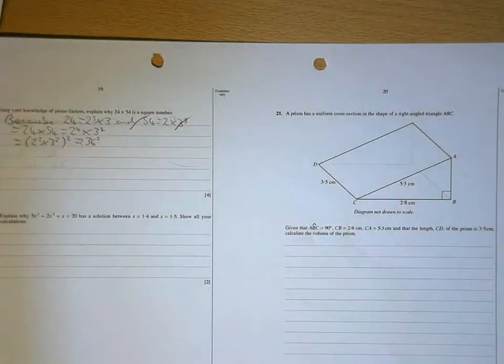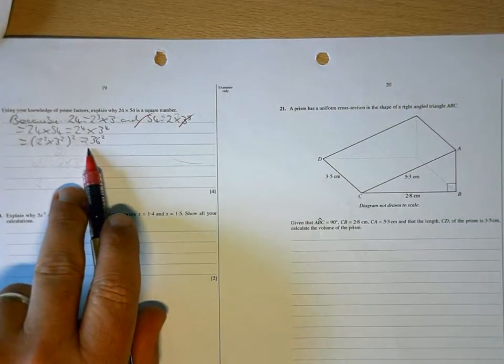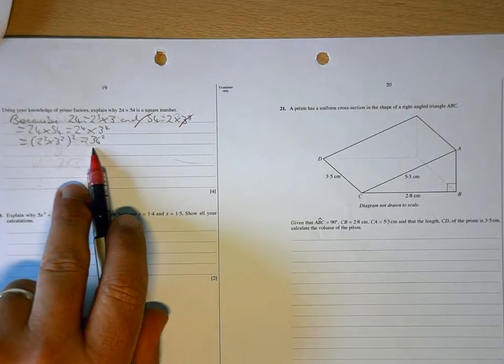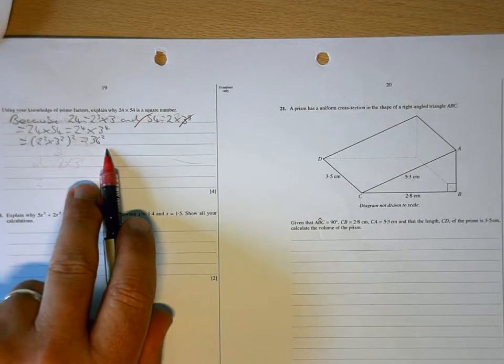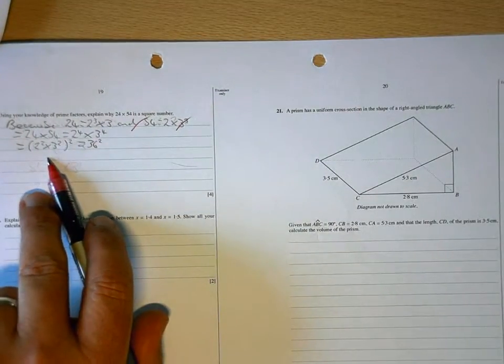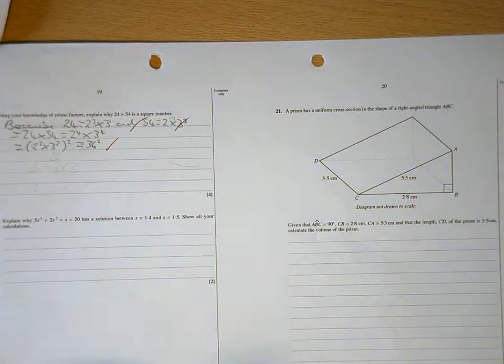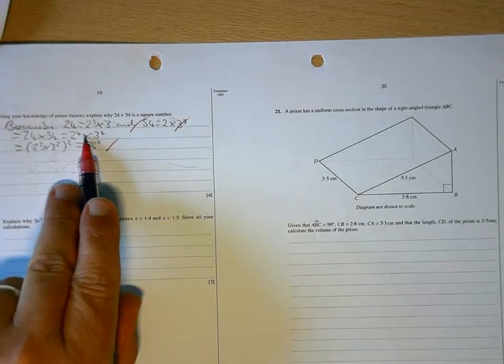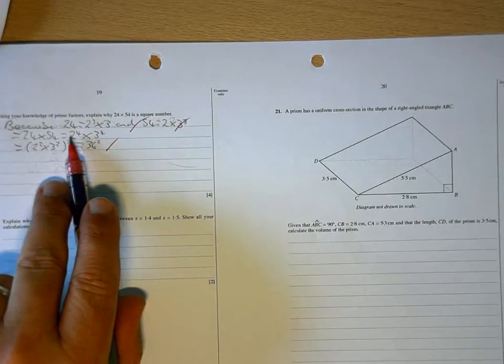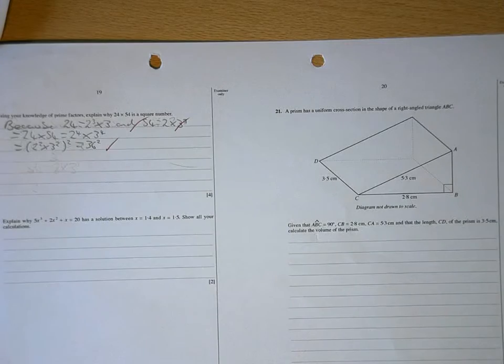That is correct. And that is correct. You don't need to do anything as complicated as what you've done there. Although it is right. So I'll give you the marks. But all you need to say at this point is that the powers are even. If you've got a product where the powers are even, then it means it will be a square number. But what you've done there is perfectly fine.